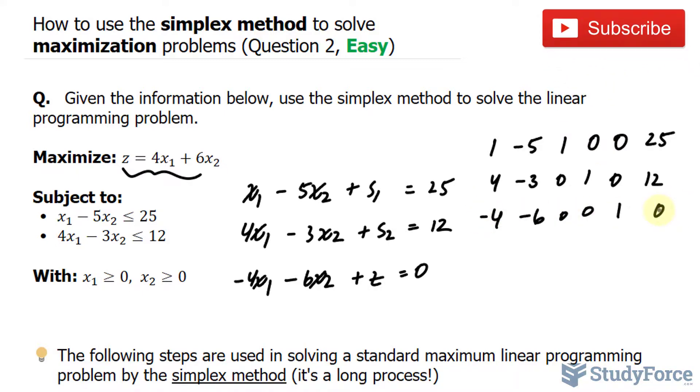So I'm going to separate this with these two constraints by putting a line. And also, I want to separate the constants from the variables. And just to label this and make it easier for us to understand, this is x sub 1, x sub 2, s sub 1, s sub 2, and z. This is our constant.